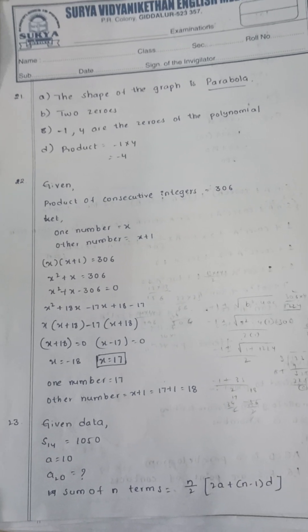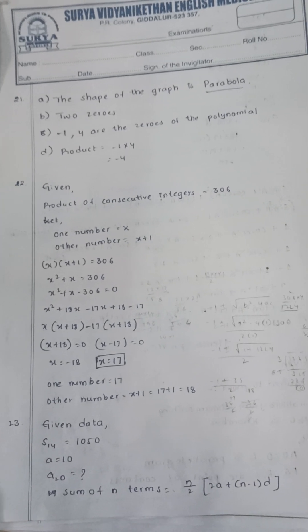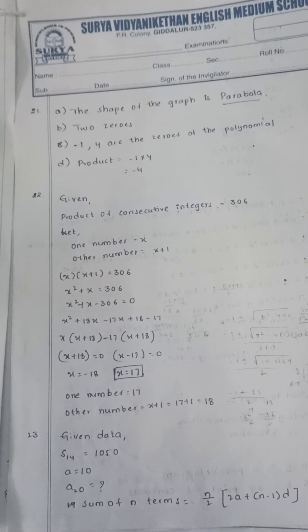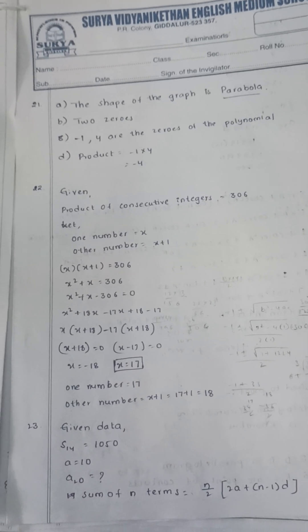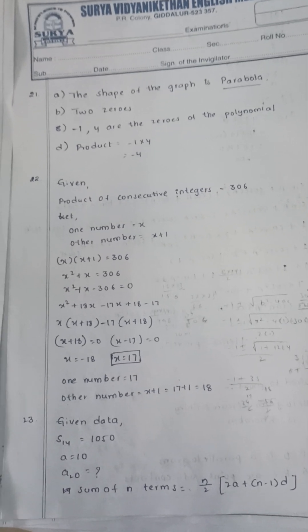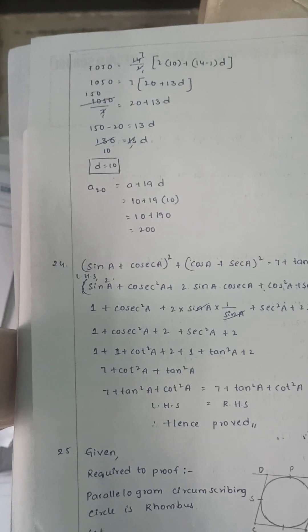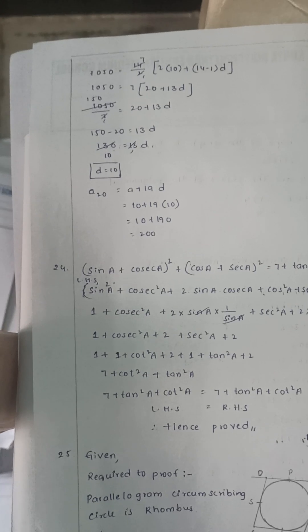The sum of 14 terms of an AP is 1050. The first term is 10. Find the 20th term. The 20th term is 200.